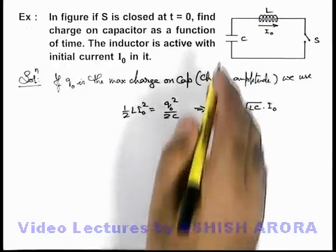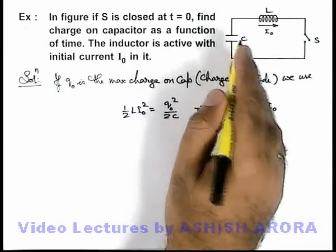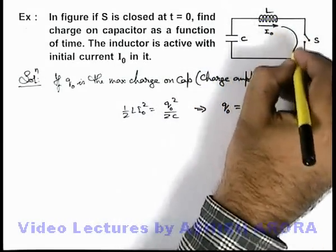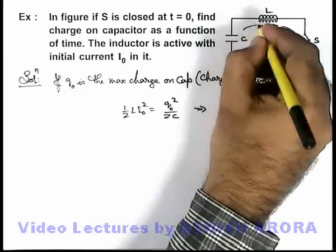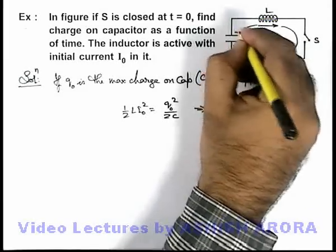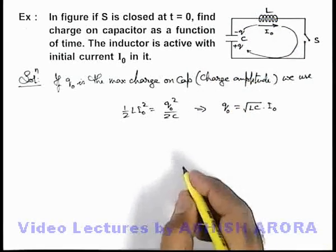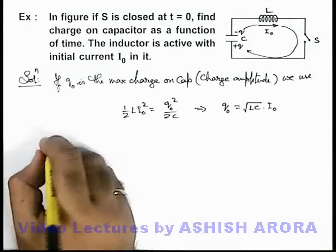Now this is the maximum charge with which the charge on capacitor oscillates, because when the current is continued, it'll deposit a charge plus q and minus q over here, and it'll further oscillate.